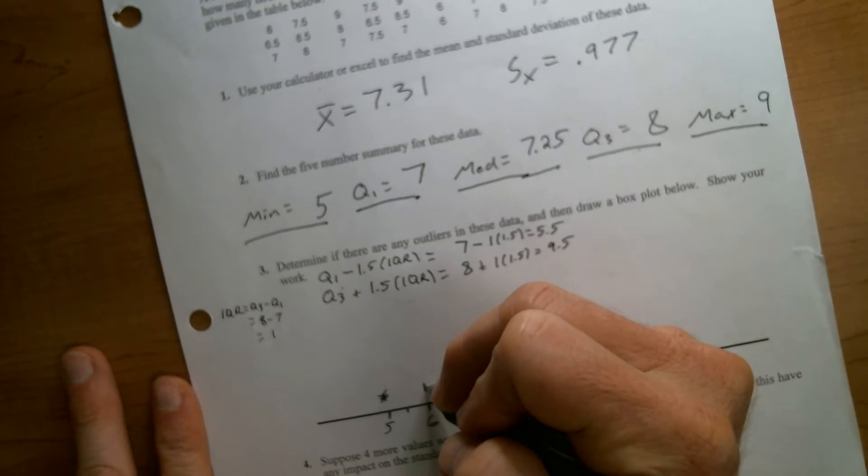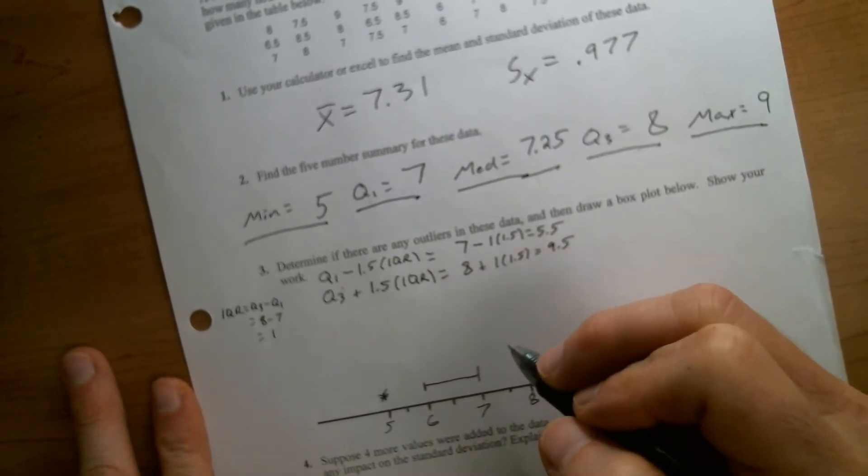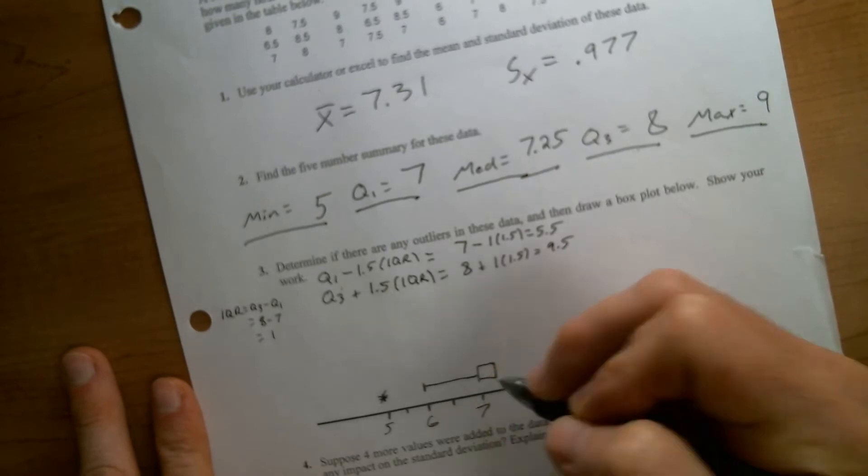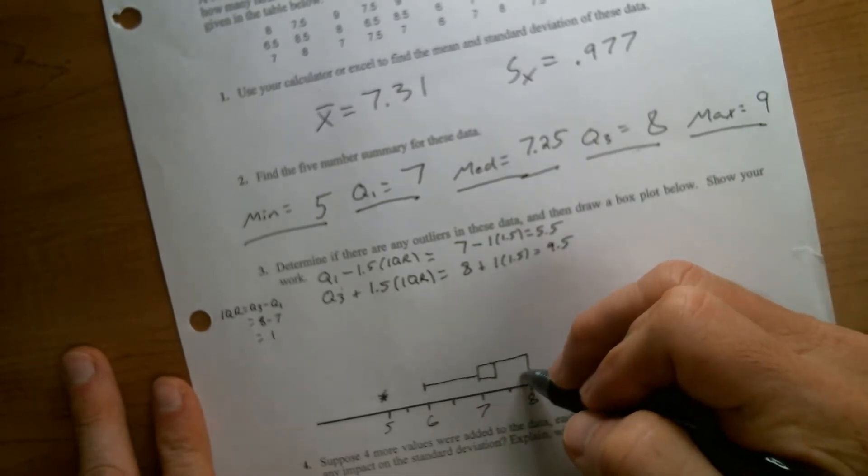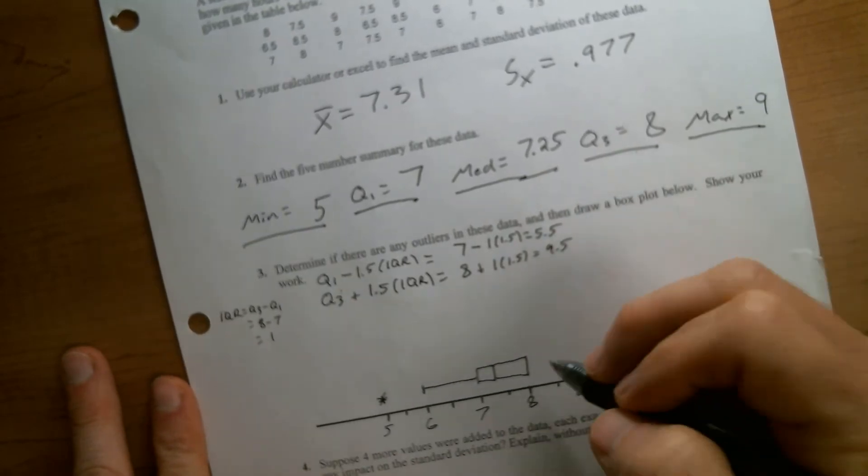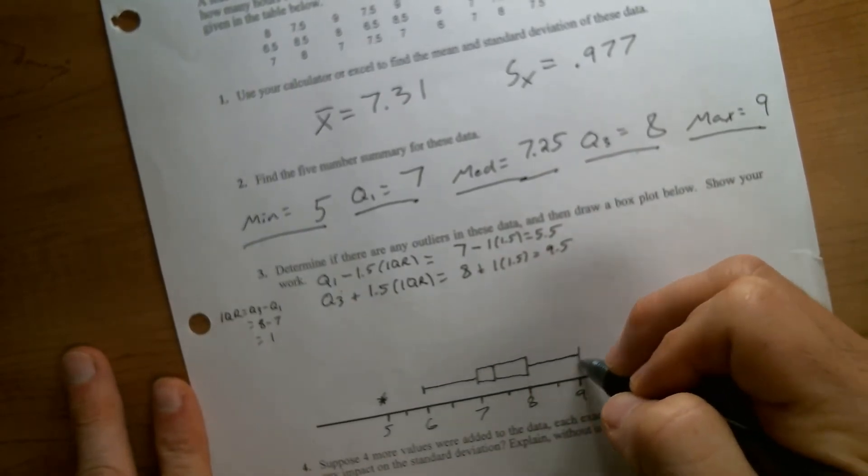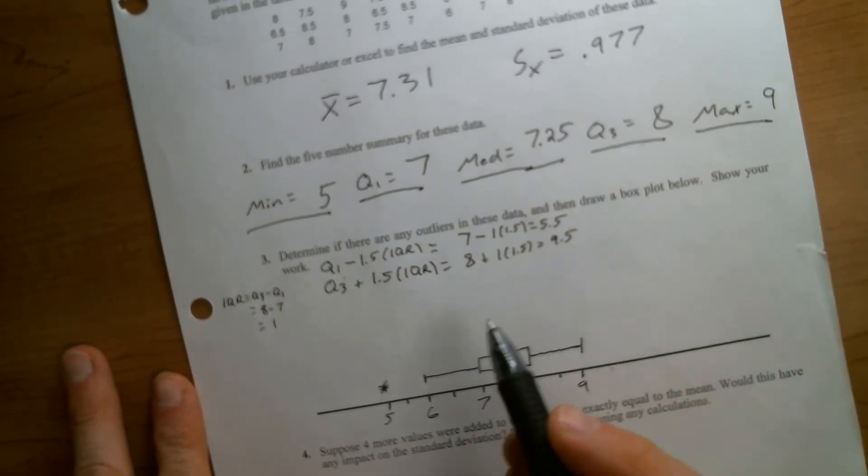Then we're going to start our box at the 7. We'll have our median line at 7.25. We'll have the end of our box at 8, which is quartile 3. And then because we don't have any outliers on the high side, the whisker will extend all the way to our max. So this is what the final box plot would look like.